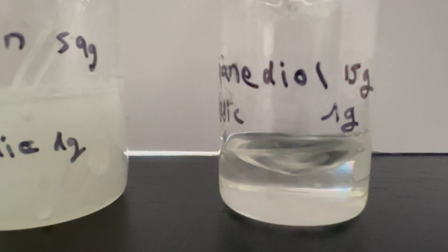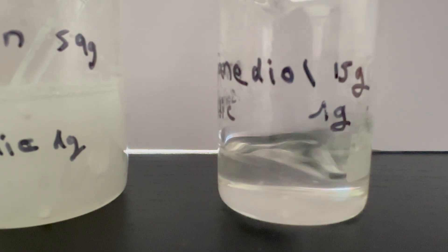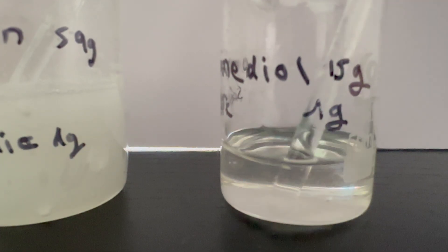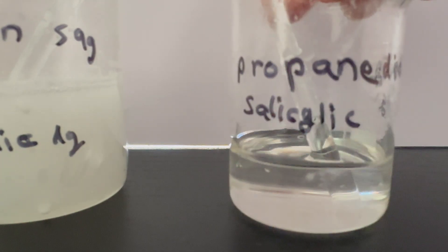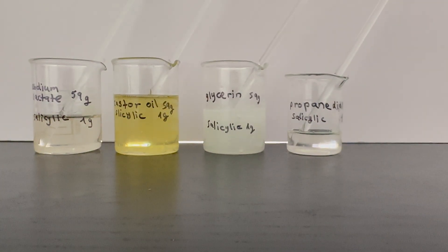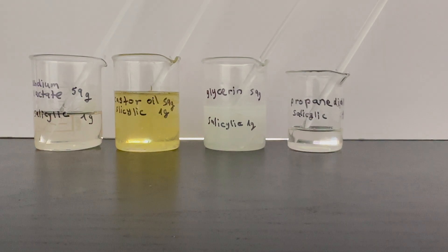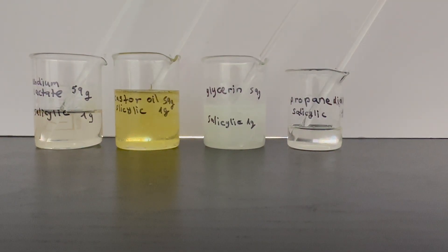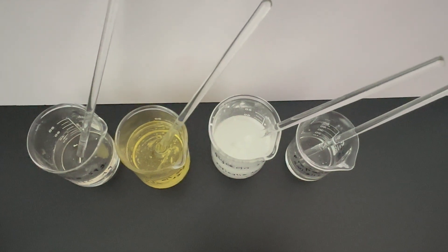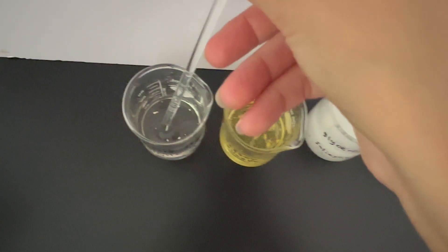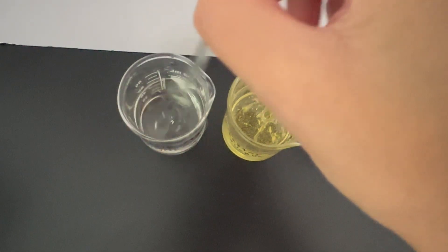Of all the options, the propandiol solution is the most efficient for a water-based formula. Here you can see the four solutions I made after about three hours. The only solution that is still not clear is the glycerin solution. You can use this as a guide when making products with salicylic acid.